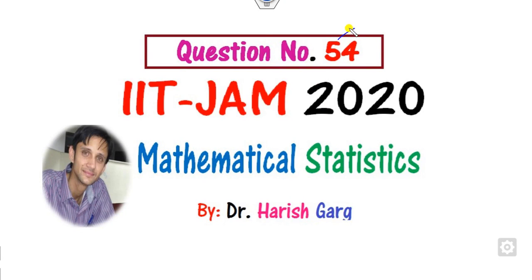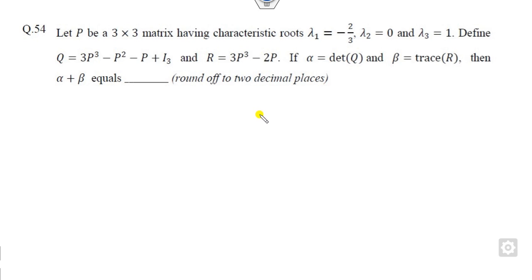Hello everyone, welcome to question number 54 which was asked in IIT JAM 2020 Mathematical Statistics. This question is worth two marks and you can solve it in a very simple manner. I will tell you how to solve this problem which is related to characteristic roots. All of you know that characteristic roots means eigenvalues.